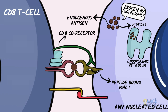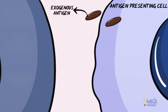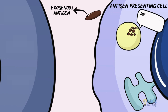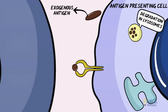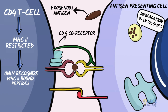CD8 T cells are MHC class 1 restricted and can recognize peptides only bound with MHC 1 molecules. An exogenous antigen captured by an antigen-presenting cell like a dendritic cell or a macrophage undergoes proteolytic degradation in lysosomes, and the broken-down peptides bind to class 2 MHC in the lysosome. The peptide-bound MHC 2 is transported to the cell surface and recognized by a CD4 T cell, with the T cell receptor interacting with the peptide and the CD4 co-receptor binding with the MHC 2 molecule. CD4 T cells are MHC class 2 restricted and can recognize peptides only bound with MHC 2 molecules.